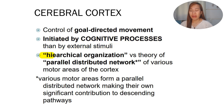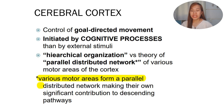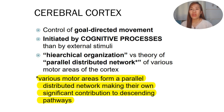There are two theories: hierarchical organization versus parallel distributed network of various motor areas of the cortex. In hierarchical organization, the higher parts of the brain control movement of the body. In the parallel distributed network theory, various motor areas of the cortex give or initiate the movement, each making its own significant contribution to the descending pathways.